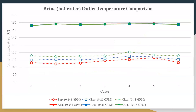There is a big difference between experimental and analytical values. There may be two reasons for this: first, we didn't consider the cross flow part; and second, there must be surrounding temperature effects — we didn't consider the surrounding heat loss.